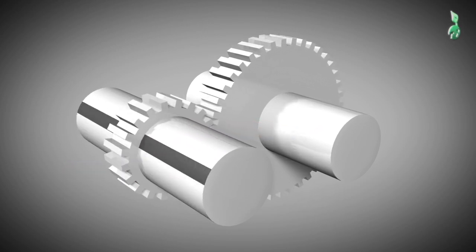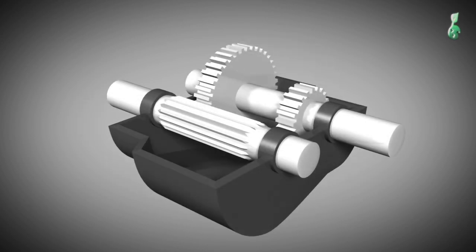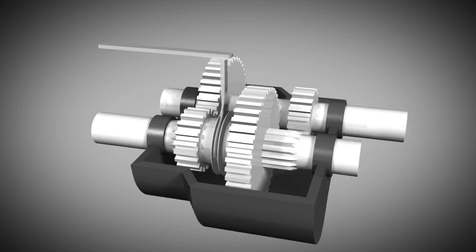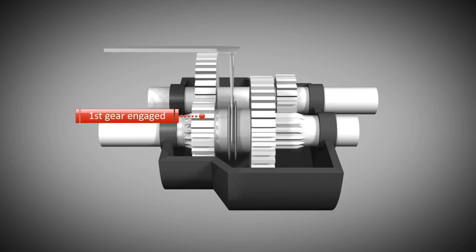First let's have a quick look at the basic principle of transmissions. For that purpose a very simple two-speed gearbox will be explained. Two gear wheels are machined into the output shaft. The other two wheels are mounted on a spline shaft. These two wheels can slide from left to right and from right to left to change gear ratio.